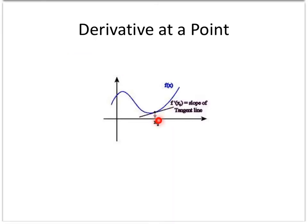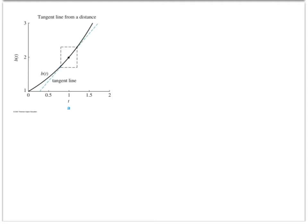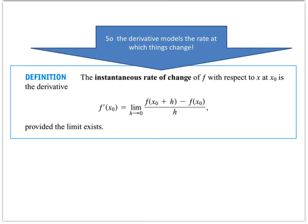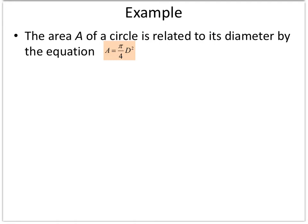This is where we started class. We're interested at a particular point — we zoom way, way into this function and get so close that we're looking at a line, which we call the tangent line. The derivative models the rate at which things change. There's nothing new there. The new part is that now you're going to have lots of word problems.